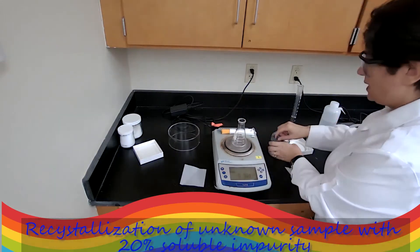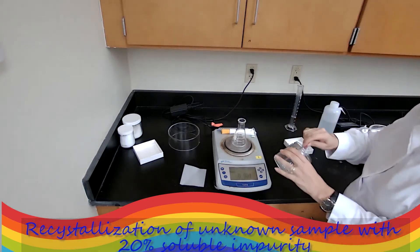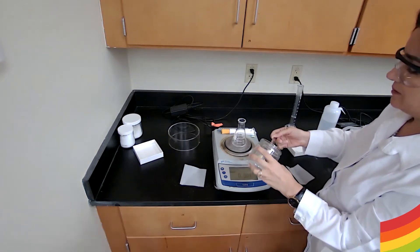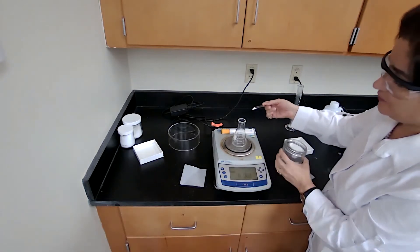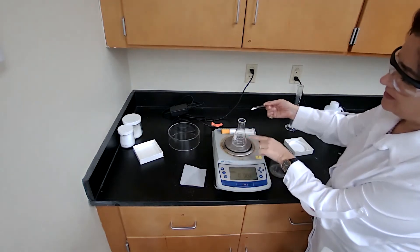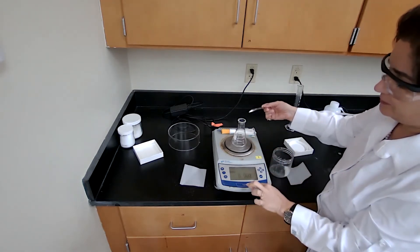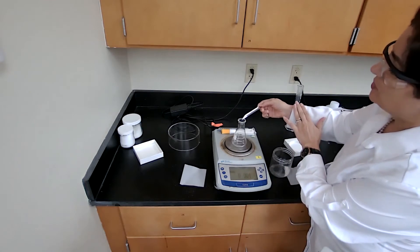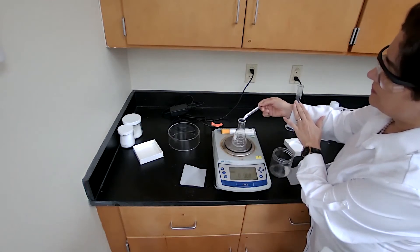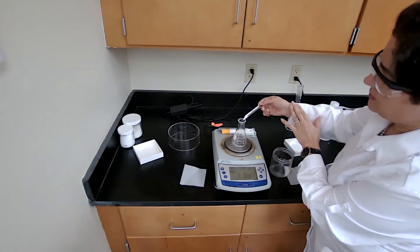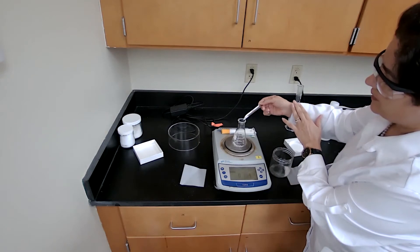Following the procedure, I am going to measure one gram of the mixed unknown sample for recrystallization. I place the Erlenmeyer flask directly on the scale, press the tare button, and I am going to measure one gram directly into the flask.